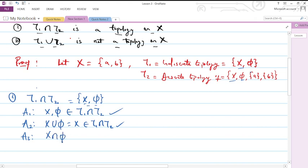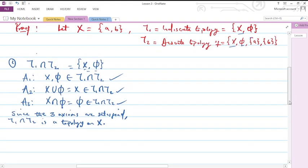The third axiom now, which is intersection. X ∩ X is a member of T₁ ∩ T₂. Empty set ∩ empty set is also a member. X ∩ ∅ = ∅ which is a member of T₁ ∩ T₂. Since all three axioms are satisfied, we can conclude that T₁ ∩ T₂ is a topology on X.